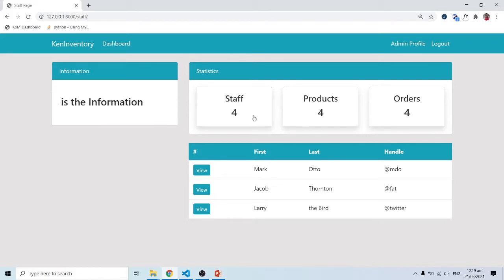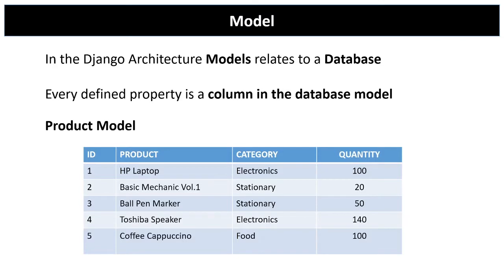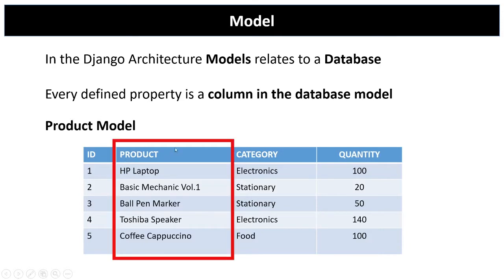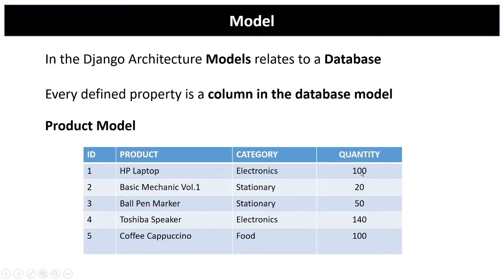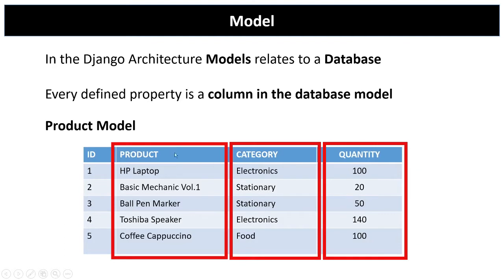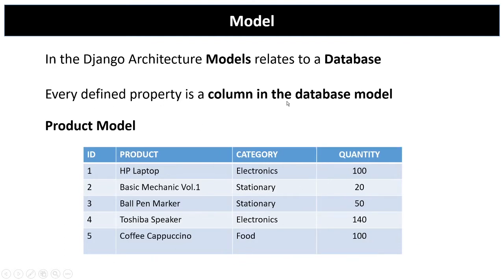As far as Django is concerned, we have the MVT — the Model View Template. The model handles the database. Every defined property is a column in the database model. For example, for a product model we can have the product name, category, and quantity as columns, which are going to be defined as properties in our model.